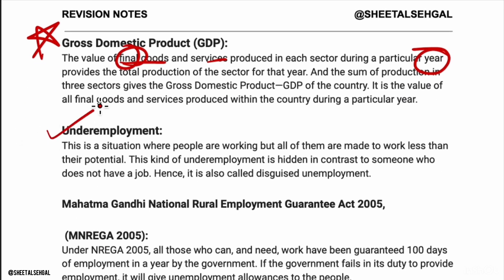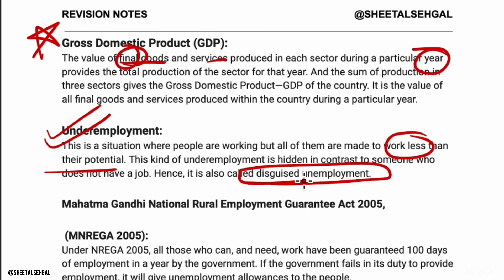Next is under-employment. This is a situation where people are doing work but are made to work less than their potential — this is also called disguised unemployment. Under-employment and disguised unemployment are the same thing. For example, if 5 people can do the work at one place but 7 people from the family work there, the extra 2 are not really needed — they appear employed but are not truly required.